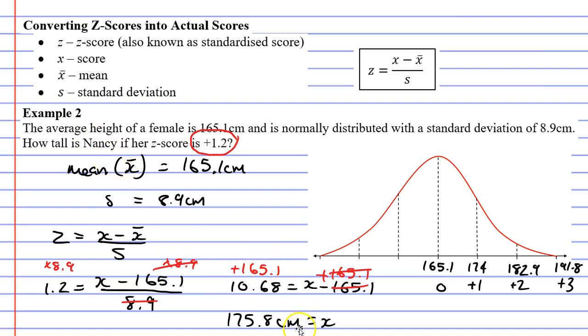And just to double check that, looking at my bell curve, I said earlier it's going to be slightly above 174, because 1.2 is slightly above a z-score of positive 1.